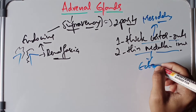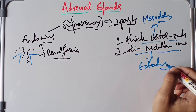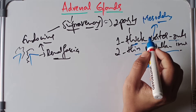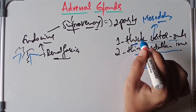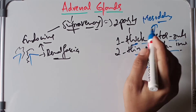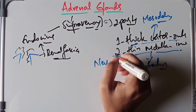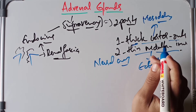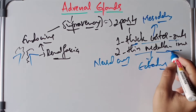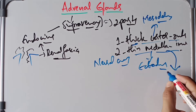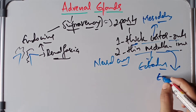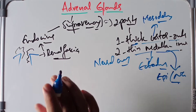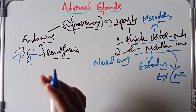The cortex is derived from the mesoderm — specifically from the mesodermal lining of the peritoneal cavity. The medulla is derived from the ectoderm, developing from neural crest cells, and is equivalent to sympathetic ganglion cells because it releases epinephrine and norepinephrine.